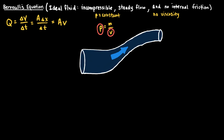If we compare two different points along the pipe, we can say that A1·v1 equals A2·v2. This equation is often referred to as the continuity equation, and it plays an important role in understanding Bernoulli's equation. Most importantly, it tells us that if the cross-sectional area of the pipe decreases, then the speed of the fluid will increase.